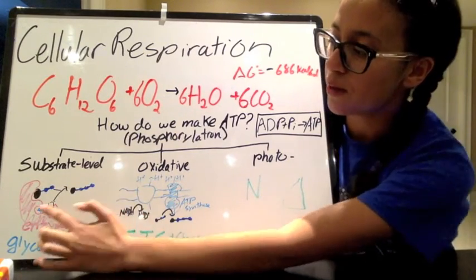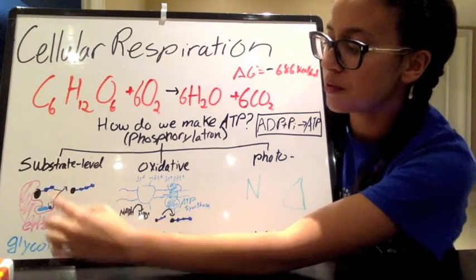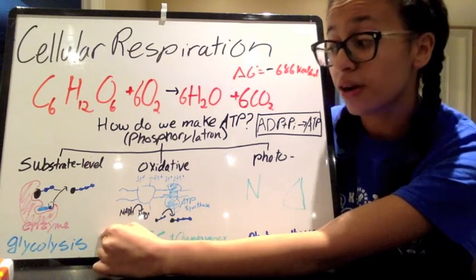So substrate level phosphorylation, you have an enzyme and then you have a substrate that has a phosphate group on it, and then you have your ADP over here and then you end up with ATP. This happens in glycolysis, we're going to look at that more in depth soon.